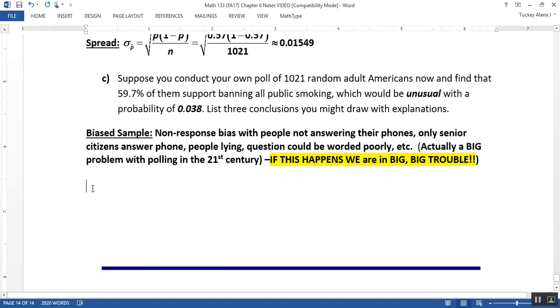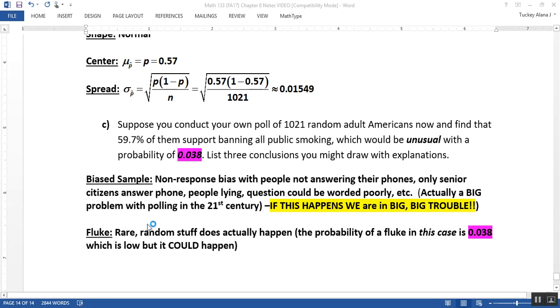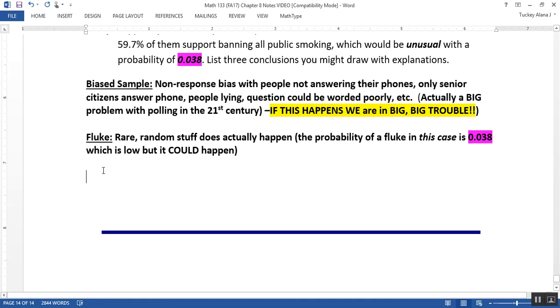Now, there is another possibility. It could just be a fluke. Random things do happen. So let me just say stuff happens by random chance. That's what fluke is here. I'm going to just write fluke. So rare, random stuff does actually happen. The probability of this, in this instance, probability of a fluke in this case, is given to you as .038, right there. So that's the probability of a fluke. And you have to decide, is that so low that I don't think it's a fluke. I think something else is going on. So .038 is low, but it is possible that it could happen.